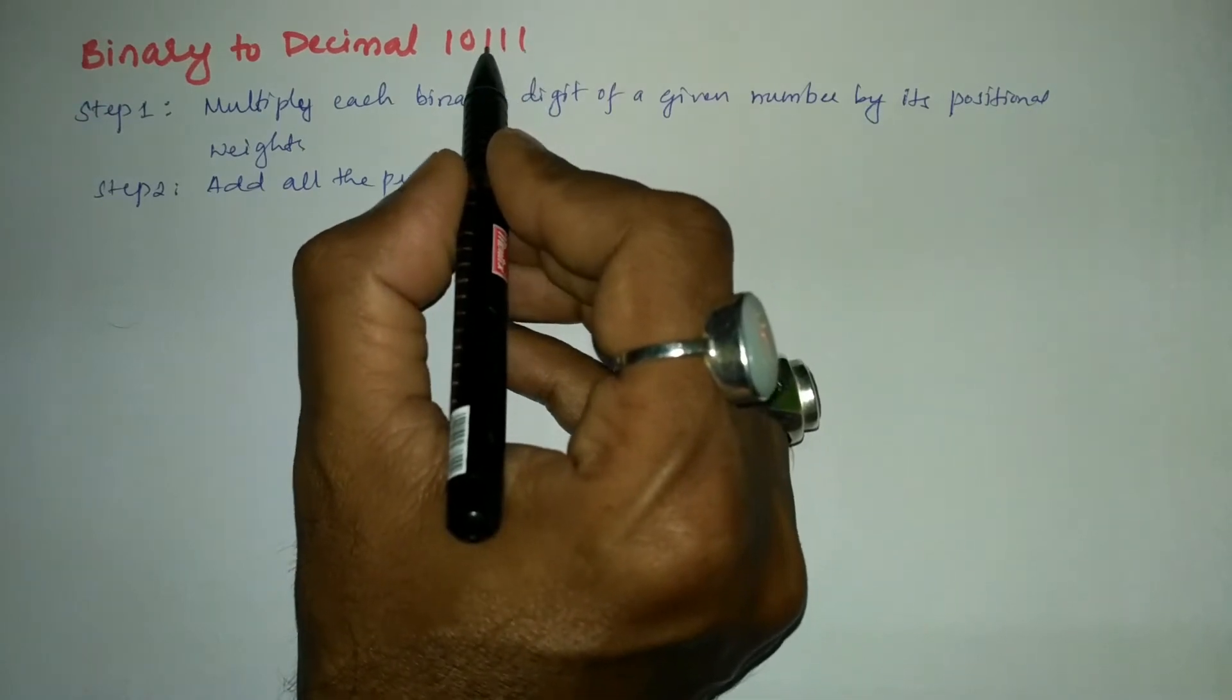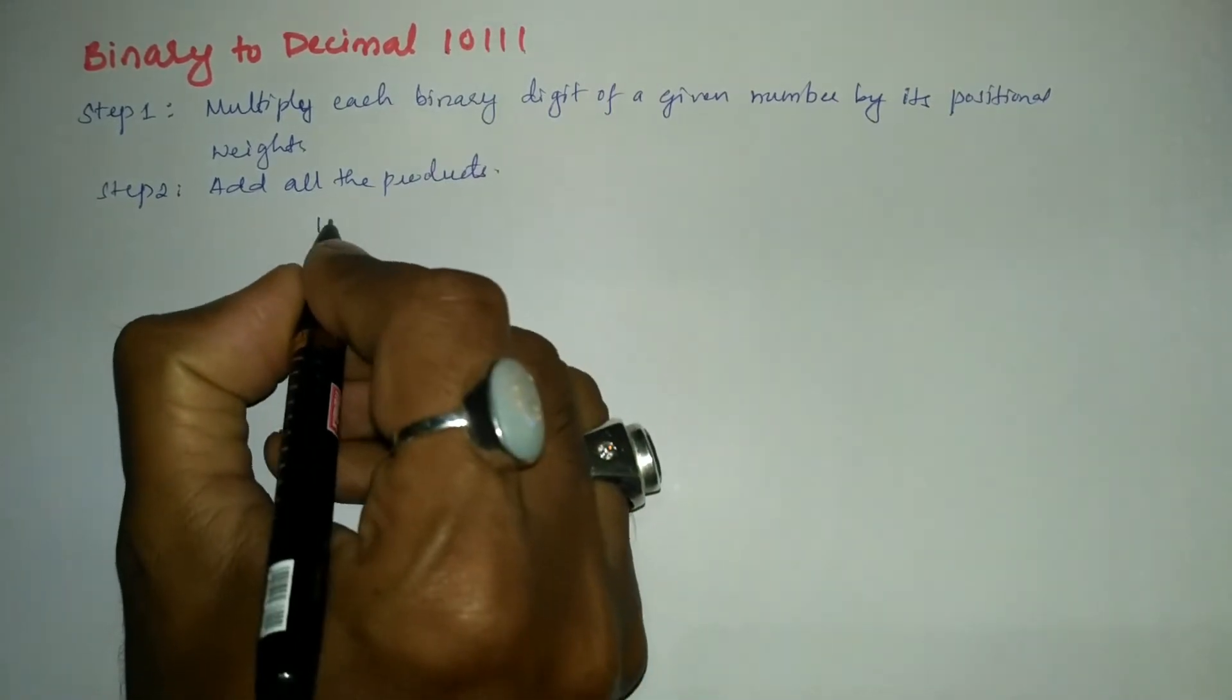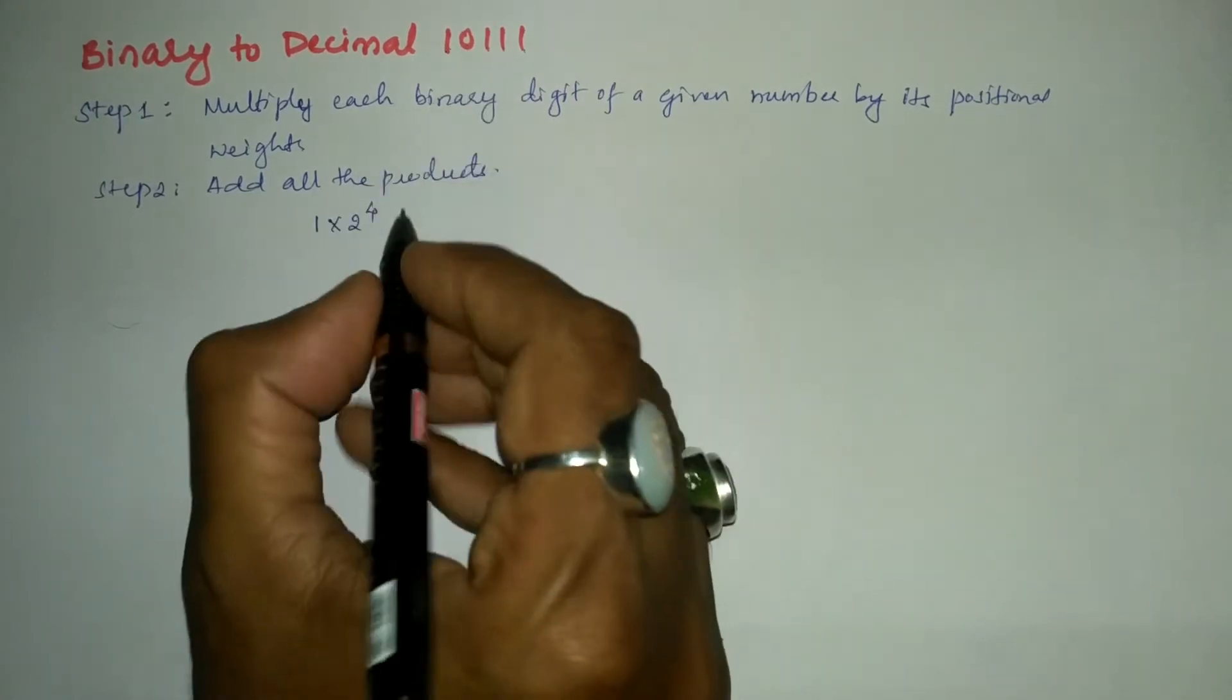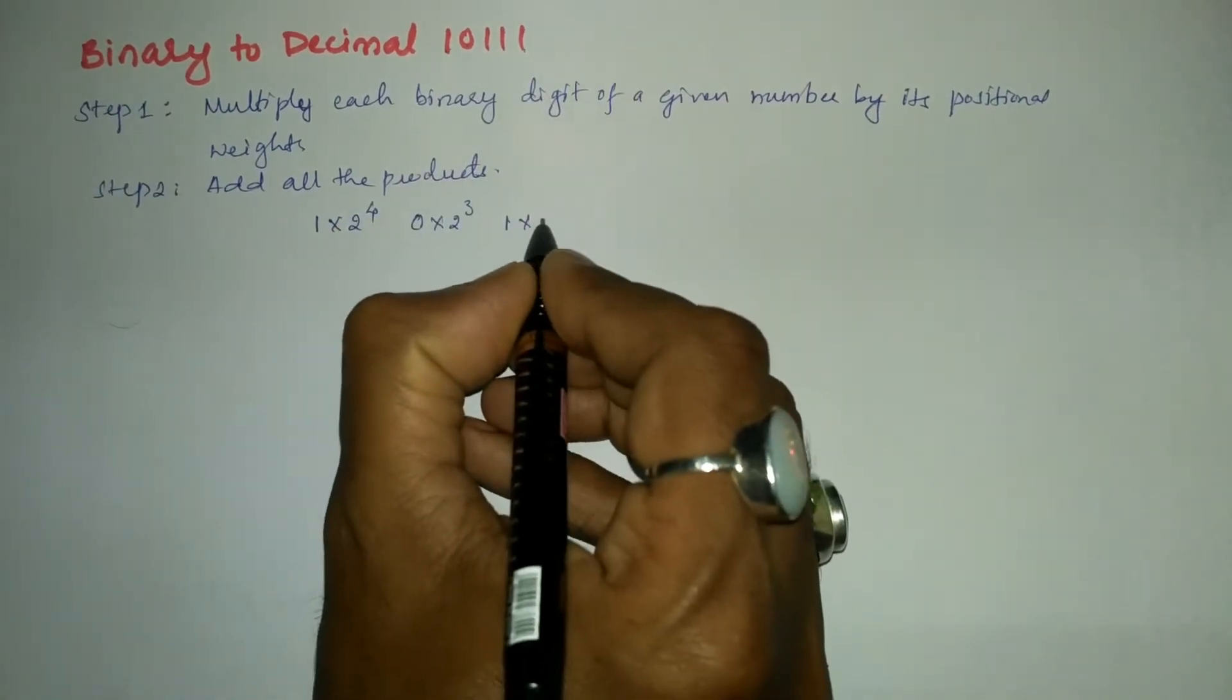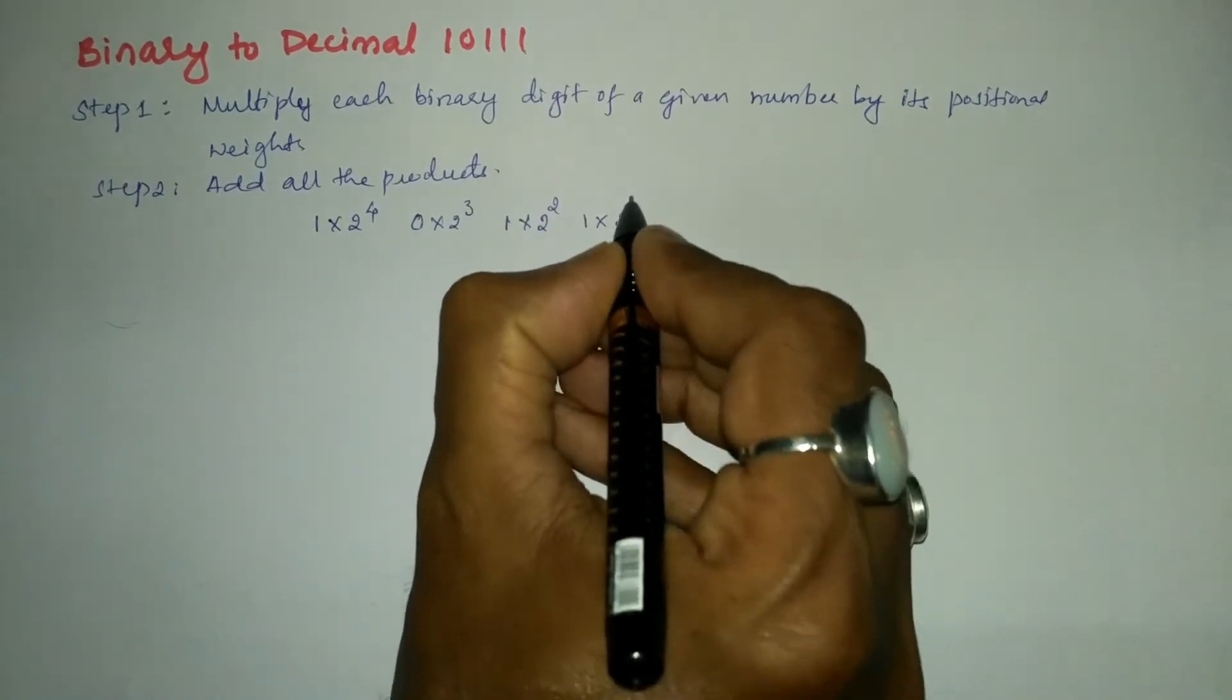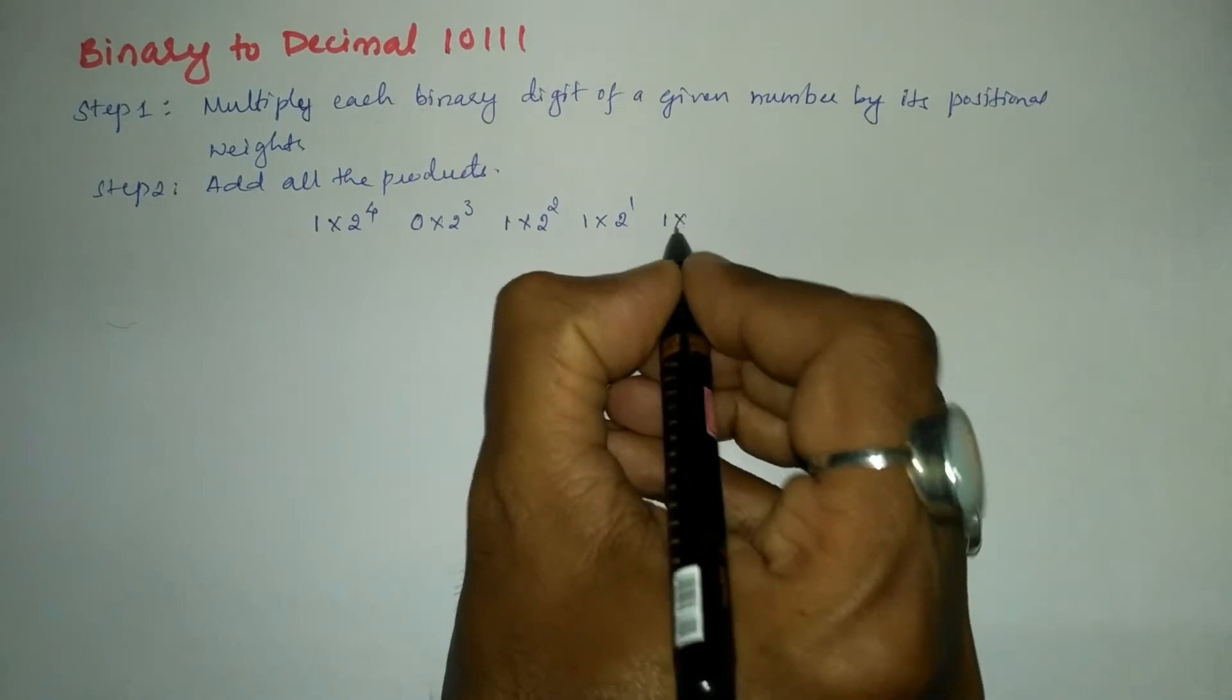Here I'm going to write this bit: one into two to the power four. Next, bit number zero into two to the power three. Next is bit number one into two to the power two. Next is one bit, two to the power one. The last one is one bit, that is two to the power zero.